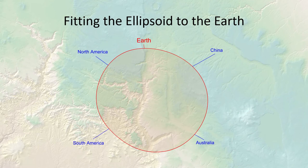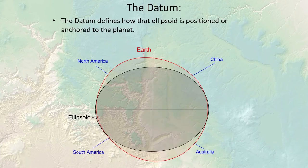The ellipsoid alone is not enough to model the shape of the earth. Because of the earth's non-symmetrical shape, we also need to know how to position the ellipsoid so it best conforms to the shape of the earth. The ellipsoid combined with how it is anchored to the earth together form what we call the datum.